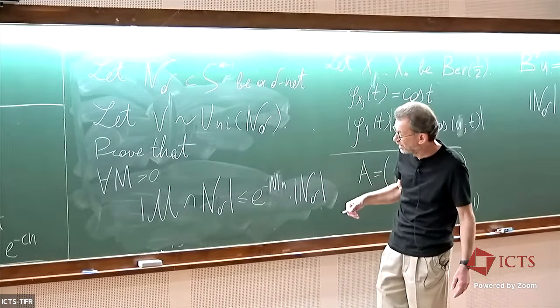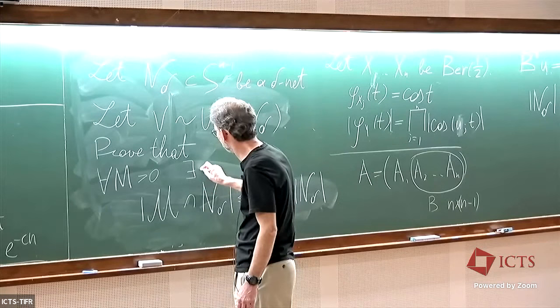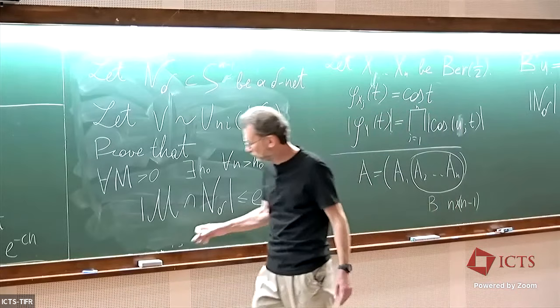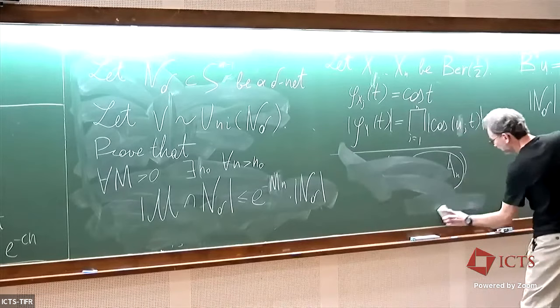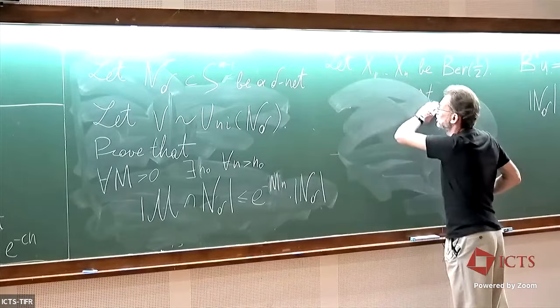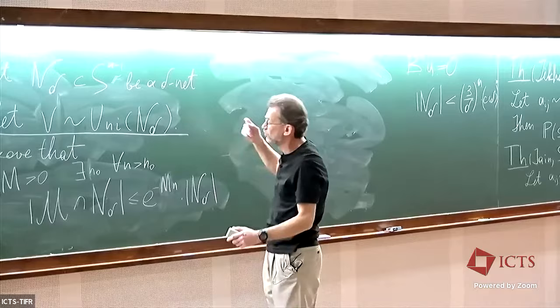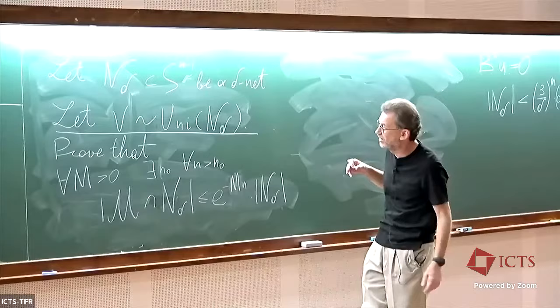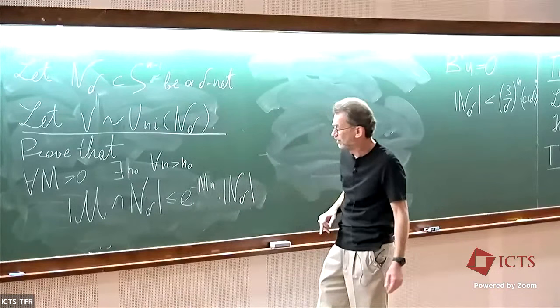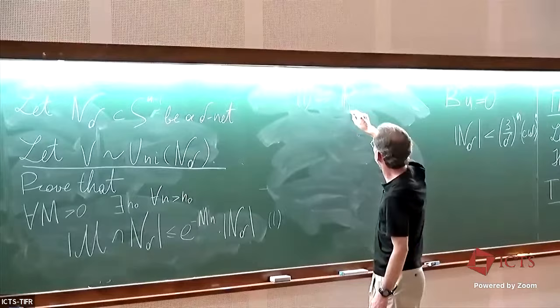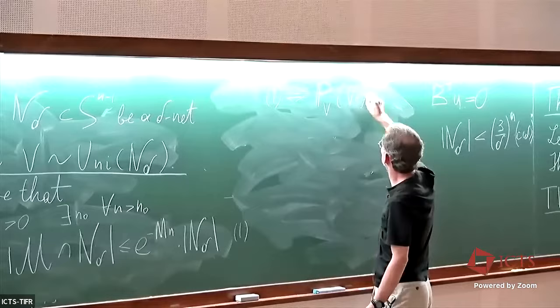What is really proved is: for any m there exists an n₀ such that for all n greater than n₀ this holds. This is a deterministic statement, but it is amenable to probabilistic interpretation. Introducing a random vector v uniformly distributed in this net, statement one is equivalent to: the probability with respect to v that v belongs to m is exponentially small.